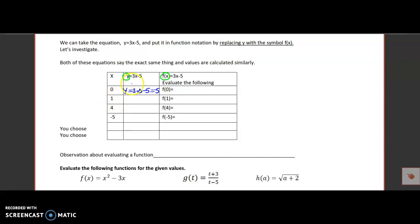This tells me to put a 1 in place for x, and if I put a 1 in place for x, 3 times 1 minus 5 will be negative 2. And if I put a 4 in place for x, 3 times 4 minus 5 will be 7. Finally, if I put a negative 5 in place for x, it's 3 times negative 5 minus 5, so that's negative 15 minus 5, that's negative 20.